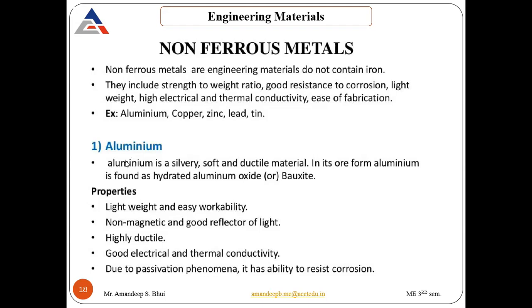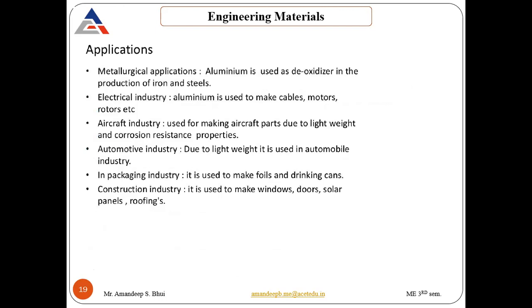The first non-ferrous material is aluminum. It is silvery in color, soft and ductile. Aluminum is found as hydrated aluminum oxide or bauxite ore. Its properties include: light in weight, easily worked, low hardness, non-magnetic, good reflector of light, high ductility, good electrical and thermal conductivity, and due to the passivation phenomenon it has the ability to resist corrosion.